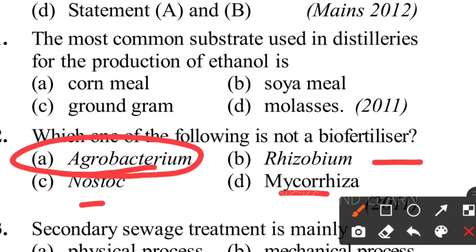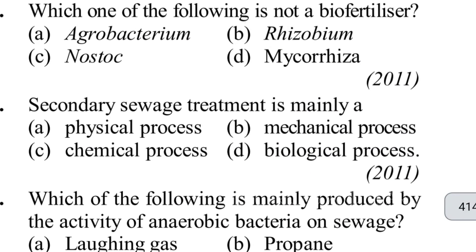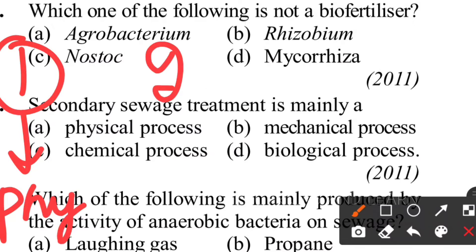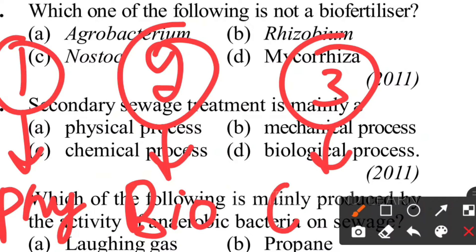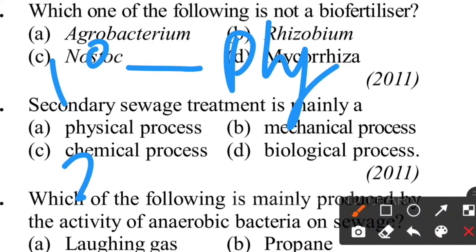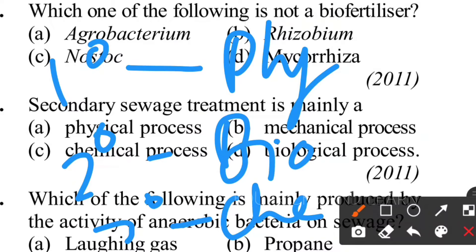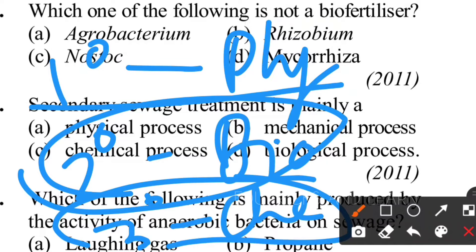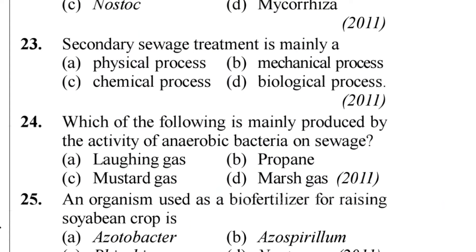Twenty-third question: secondary sewage treatment is mainly what? A simple trick: primary treatment uses physics, secondary uses biology, and tertiary uses chemistry. In primary treatment, physical methods remove floating and settled materials. In secondary treatment, biological agents (pathogens/enzymes) break them down. In tertiary treatment, chemicals like chlorine or ozone purify the water. So secondary treatment is mainly option D - a biological process.